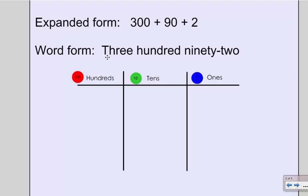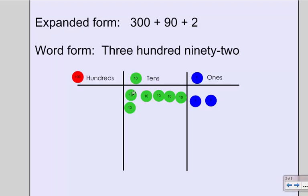In word form, I write 392. With my place value disks, I'm going to show 2 ones. I'm going to show 9 tens — as 9 tens makes 90 — and I'm always going to make those in groups of 5. So I have 5 tens and I'm going to use 4 more, and then my 300s. So I should have 3 hundred disks, 9 ten disks, and 2 one disks.